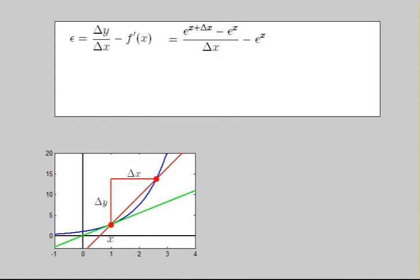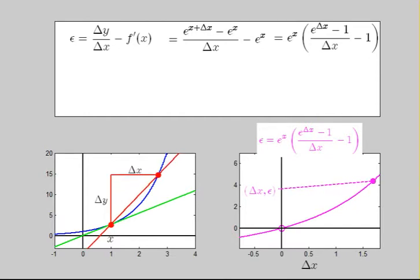In the case of our exponential, we can use properties of exponents, then factor out e to the x, to obtain the pink expression. Note that epsilon is a function of delta x and is plotted in the bottom right of your screen.